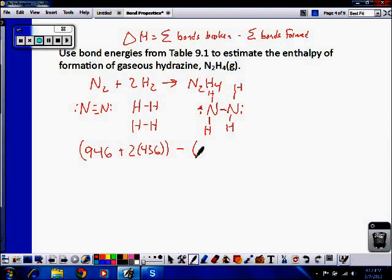So that's the bonds broken, minus the bonds formed. The bonds formed are one nitrogen to nitrogen bond, which is 163 kilojoules, plus four hydrogen to nitrogen bonds. Each one of those has an energy of 389 kilojoules per mole.